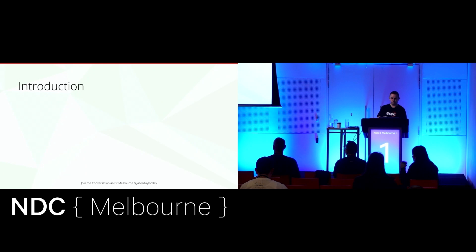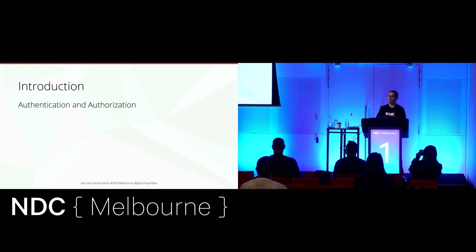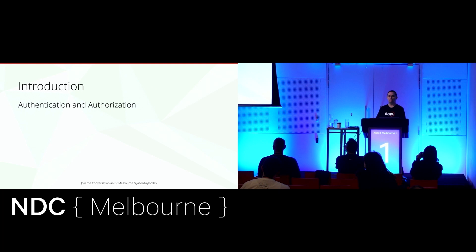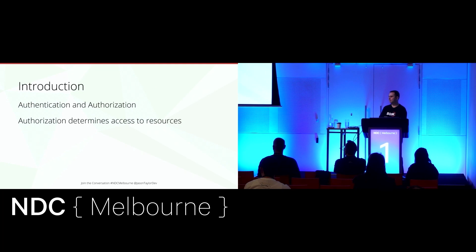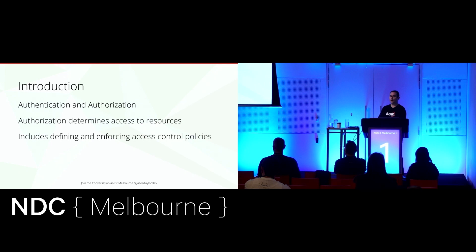A little bit of background information. Authentication is the process of determining a user's identity, whereas authorization is the process of determining what resources a user has access to. Authentication is independent of authorization, but authorization requires an authenticated user. Authorization determines access to resources — such as data, files, views, and features — and includes defining and enforcing access control rules as policies, which are used by the system to grant or reject access requests.